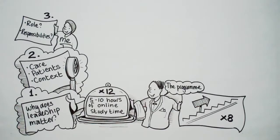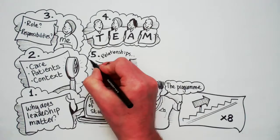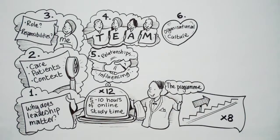Unit three explores me, my role as a leader and my responsibilities to lead a diverse workforce. Unit four explores teams and team working, whilst unit five looks at relationships and influencing within the wider healthcare system in which you work.